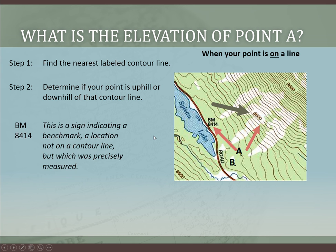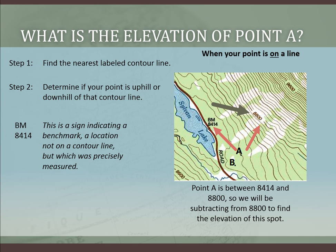BM, just so you're aware, is a sign indicating that this is a benchmark, meaning it's a location where the USGS field survey people went out and determined the exact elevation of that spot. Perhaps they simply wanted to find the elevation of that particular lake. It's not on a contour line, but that one spot was precisely measured. We find that point A is between this 8,414 and this 8,800, so it's downhill of the 8,800 — it's less.